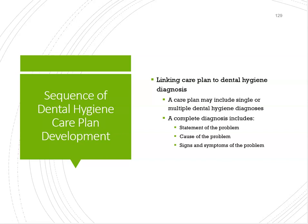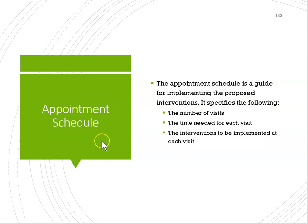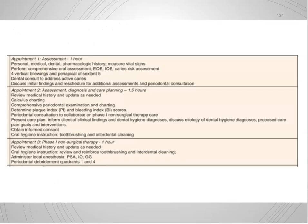When coming up with a care plan, it's important to create a sequencing or appointment schedule. Determine how many visits are needed, how much time per appointment, and exactly what you're doing in each appointment. For example, appointment one might be assessment for one hour; appointment two might be more assessment, care plan, and diagnosis taking an hour and a half; appointment three might be non-surgical therapy including debridement and oral hygiene instructions.